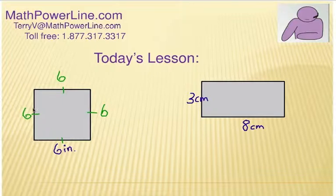Remember, perimeter is if we're going to walk all the way around. So, the perimeter in this case is going to be six plus six plus six plus six, and the answer, of course, would be twenty-four inches.